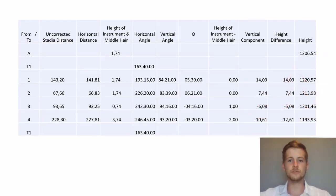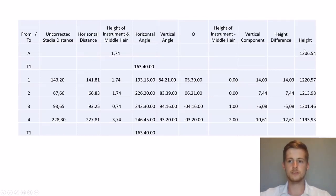So there we go. We've done our tachyometry — we've used our uncorrected stadia distance, we've used our vertical component, and we've calculated the height of each of our points.